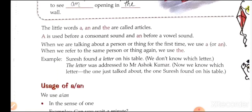The little words 'a,' 'an,' and 'the' are called articles. 'A' is used before a consonant sound, and 'an' before a vowel sound. When we are talking about a person or thing for the first time, we use 'a' or 'an.' When we refer to the same person or thing again, we use 'the.' Example: Suresh found a letter on his table — we don't know which letter. 'The letter was addressed to Mr. Asop Kumar' — now we know which letter, the one Suresh found on his table.